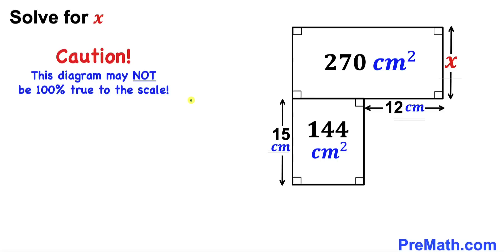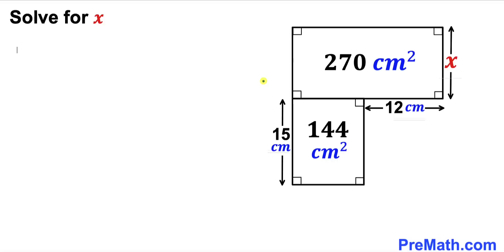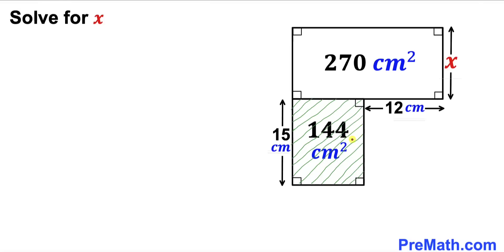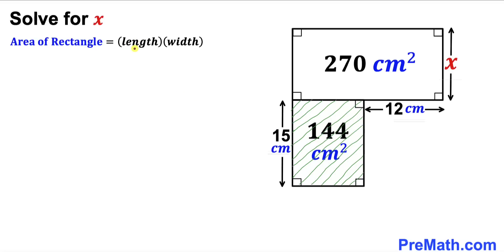Note that this figure may not be 100% true to scale. Let's get started. We'll focus on the lower rectangle. We know that the area of this rectangle is 144 centimeters square and one side has been given to us as 15 centimeters. Let's recall the area of a rectangle formula.